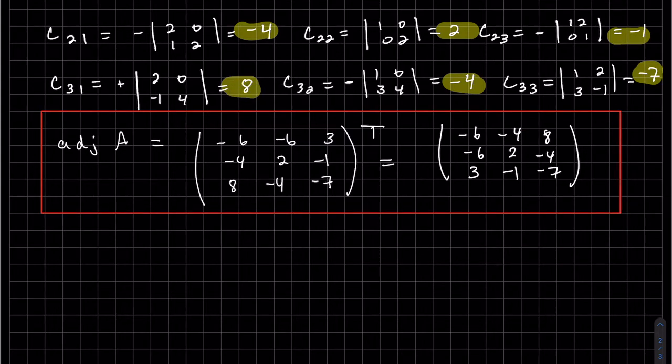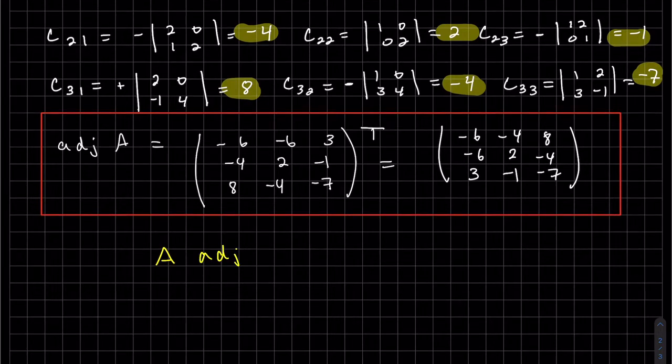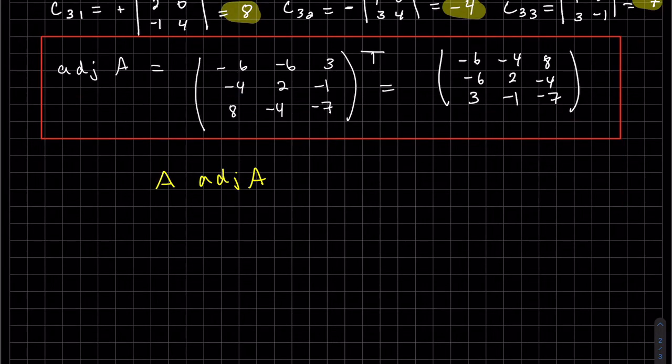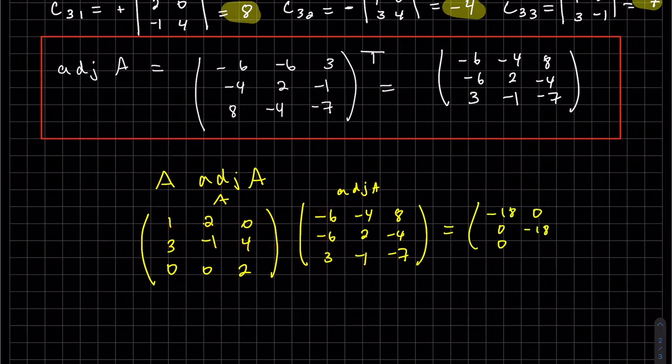We're gonna multiply now. A, I'm sorry, A times adjoint A. So our A is our adjoint A. And so we have negative 18 along our diagonal. I'm gonna factor that out. And we factor 18 out. We're left with the identity matrix.